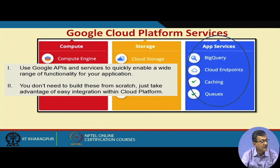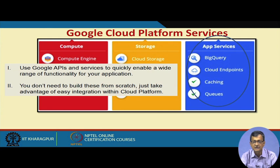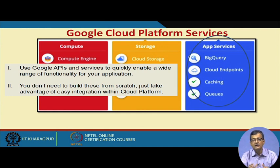Finally, there are several app services such as BigQuery, Cloud Endpoints, caching, and queues. Using Google APIs and services, you can quickly enable a wide range of functionality for your application. You do not need to build everything from scratch — just take advantage of easy integration with the Google platform. App Engine provides a set of APIs that can be leveraged for developing your own applications. This is a quick brief overview of the different modules and verticals of Google Cloud Platform.